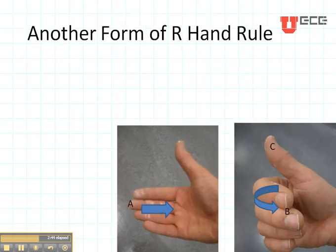Another form of the right-hand rule is put your fingers in the direction of A, turn them in the direction of B, and that will give you C. So recognize A is right here, B is around this way, and C is pointing up.